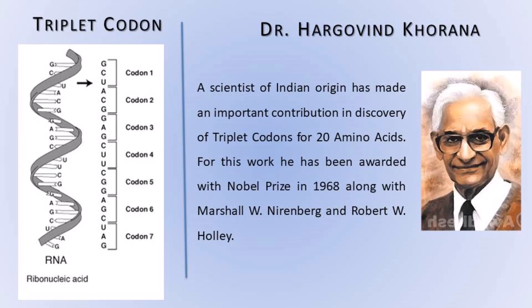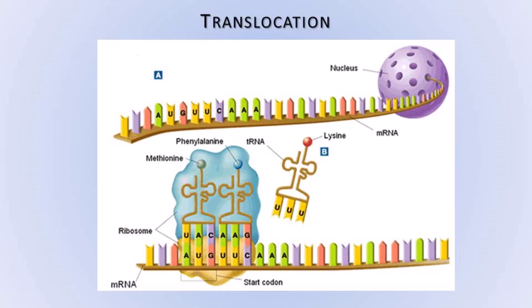Dr. Har Gobind Khorana, the scientist of Indian origin, made an important contribution in the discovery of triplet codons for 20 amino acids. For this work, he was awarded the Nobel Prize in 1968 along with two other scientists — Marshall Nirenberg and Robert Holley.